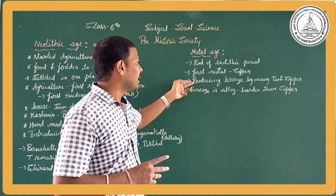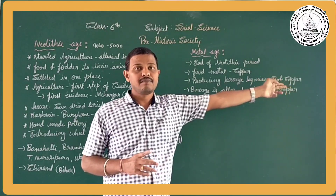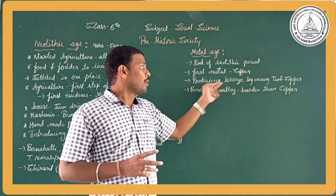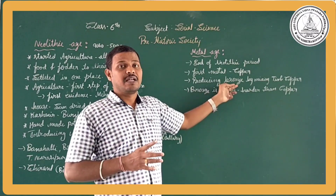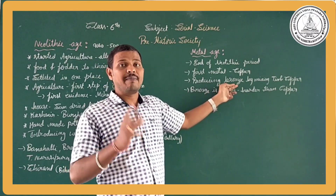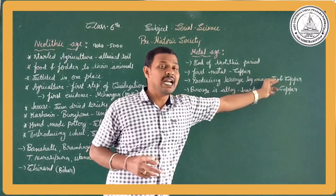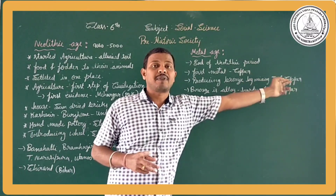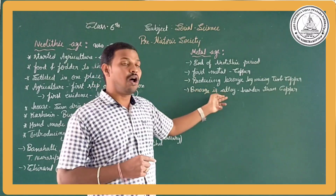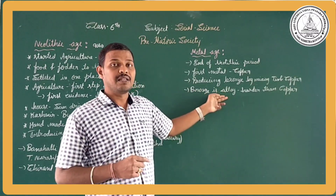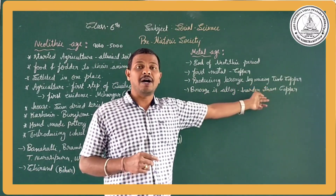They were also producing bronze by mixing tin and copper. Bronze is an alloy and it is harder than copper.